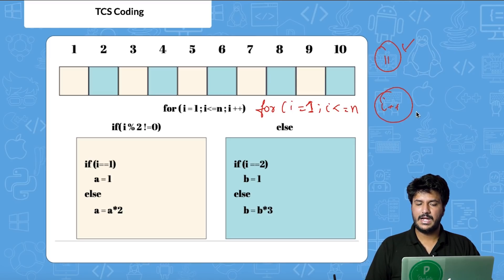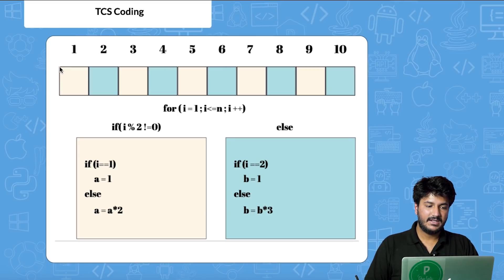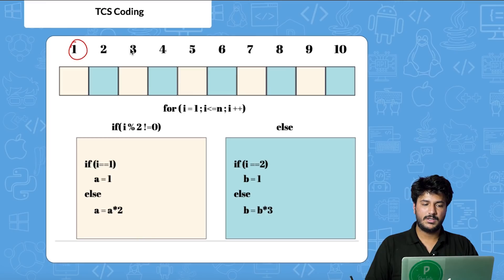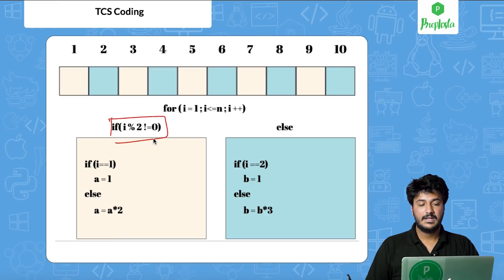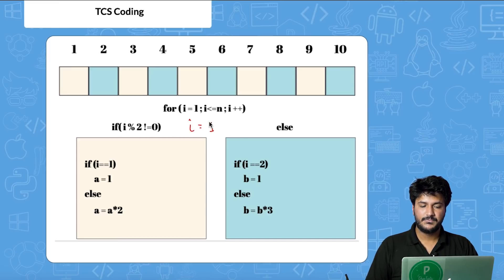Inside the for loop there is an if-else condition. Different logic applies for odd versus even positions — for odd positions it multiplies by 2, for even positions it multiplies by 3. We identify odd/even using the modulo operator: i % 2. If i % 2 != 0, it's an odd position; otherwise even.